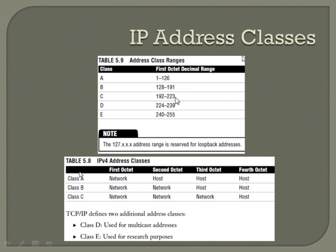That gets clearer when you look at the network and host bits. For Class A, all eight binary values in the first octet are your network bits, and everything after that is host bits. For Class B, the first two octets are network and the last two are host. For Class C, the first three octets are network and the last one is host.